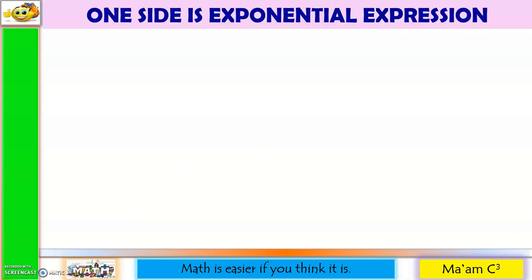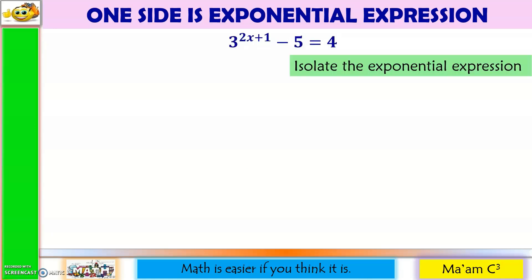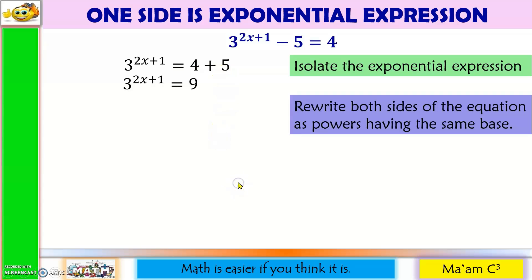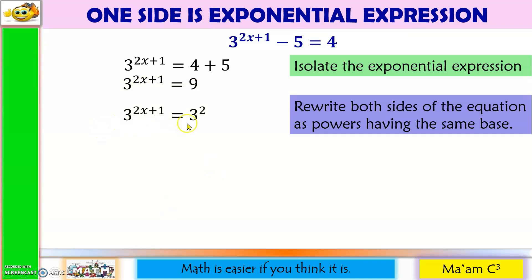Let's have an example first wherein only one side is an exponential expression. Step 1: isolate the exponential expression, meaning we're going to move negative 5 to the other side, so it will become positive. And then 4 plus 5 is equal to 9. Step 2: rewrite both sides of the equation as powers having the same base. My base here is 3 and here is 9. I can express 9 as 3 squared, since 3 times 3 is 9. So I'll copy 3 raised to 2x plus 1, and then I'll replace 9 with 3 squared. Now I have the same base.